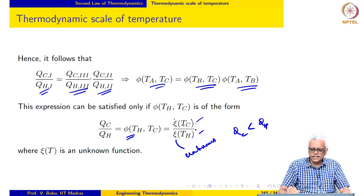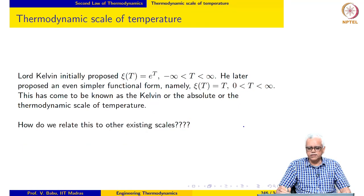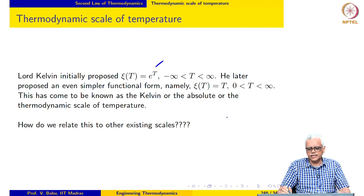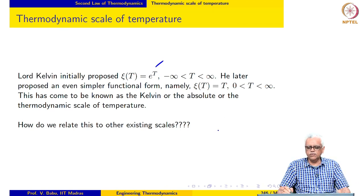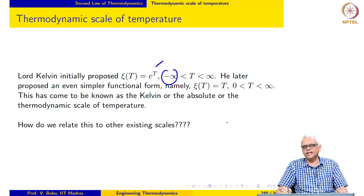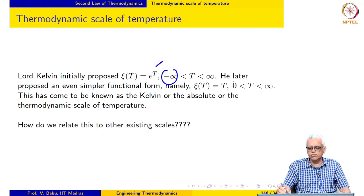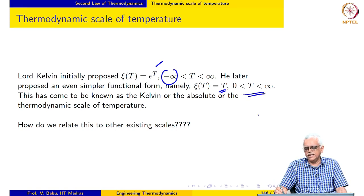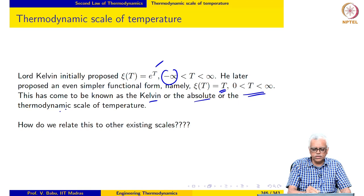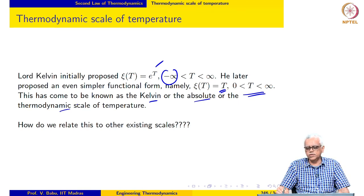There are many functions satisfying this relationship. Lord Kelvin initially proposed Xe(T) = e^T, where T could vary from minus infinity to plus infinity. However, he did not like temperatures being negative, so he discarded e^T and proposed the simpler form Xe(T) = T, in which temperatures range from 0 to infinity. This scale has come to be known as the Kelvin absolute, or thermodynamic, scale of temperatures. Consequently, QC over QH may be written as TC over TH.